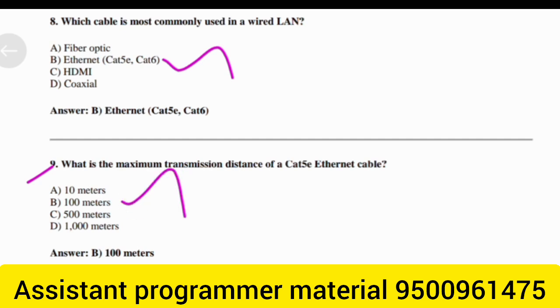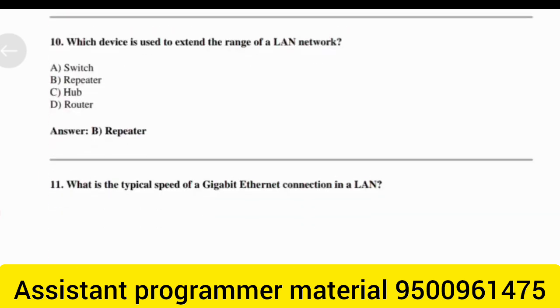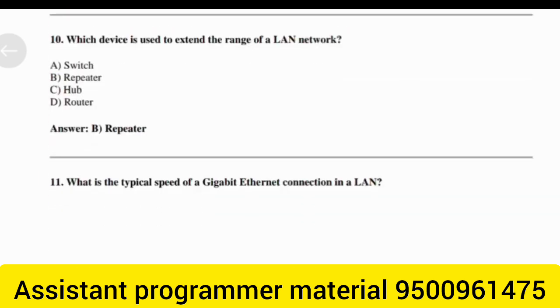What is the maximum transmission distance of a Cat5e Ethernet cable? Answer: Option B — 100 meters. Which device is used to extend the range of a LAN network? Answer: Option B — Repeater.